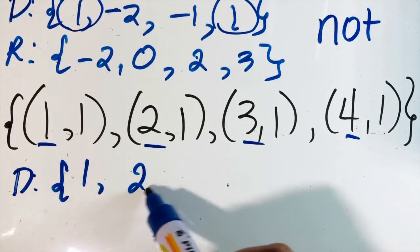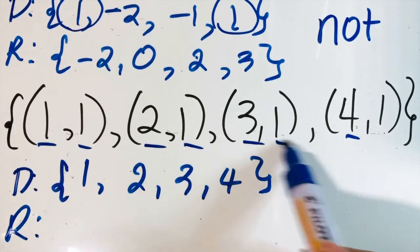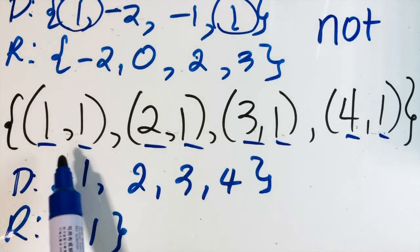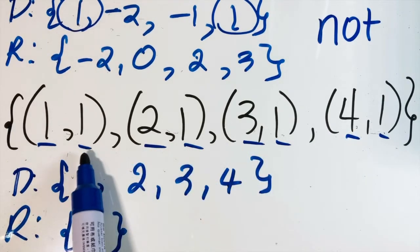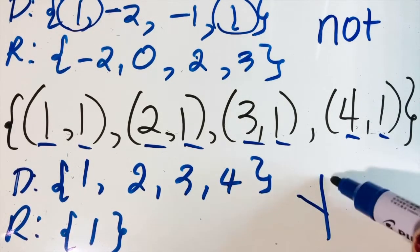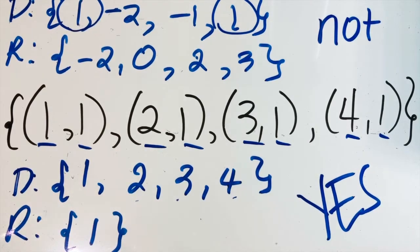How about the next example? First, list down the domain: one, two, three, four. How about the range? One, one, one, one. You might say that each domain element is paired with only one value of y, which is one. Is this a function even though y equals one appears four times? Yes, it is still a function because the definition says each element of the domain must be paired with exactly one element of y.